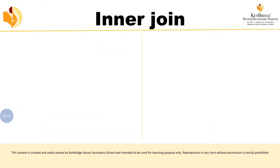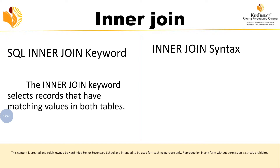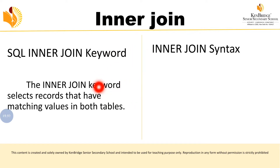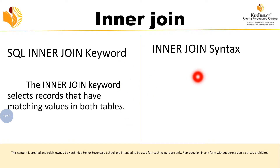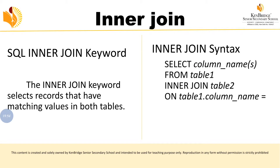The first one is inner join. The SQL inner join keyword selects the records that have matching values in both tables. We know that inner join means it will select the common part — whatever is common between the two tables, that common part alone it will take. If the values are present in both tables, those records will be selected and displayed in the output.